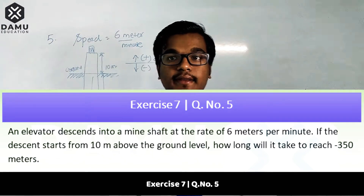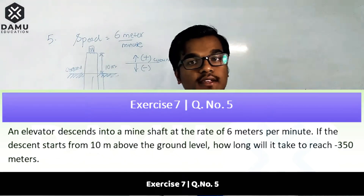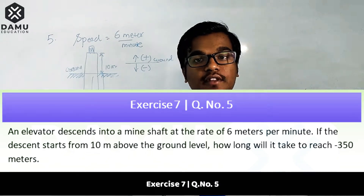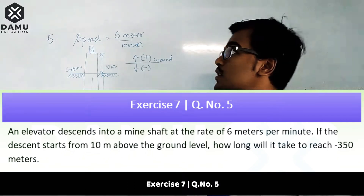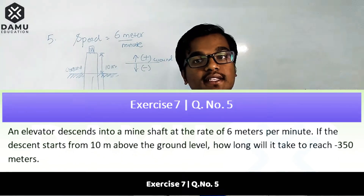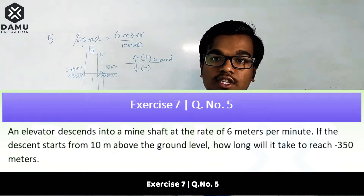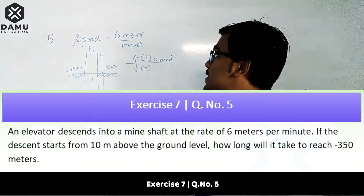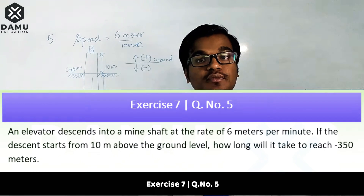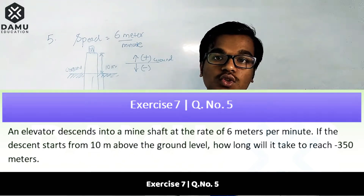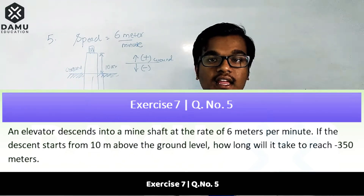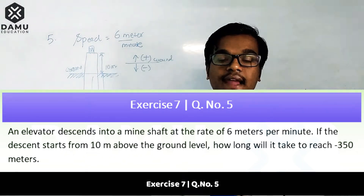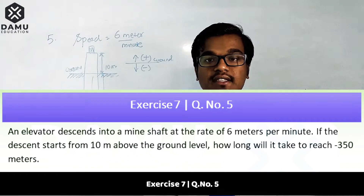This is the fifth question. Thanks for watching this video, please subscribe and watch till the end. The problem is about the speed of an elevator that descends into a shaft at the rate of six meters per minute. Normally speed is expressed in kilometers per hour or meters per second, so we need to convert units.